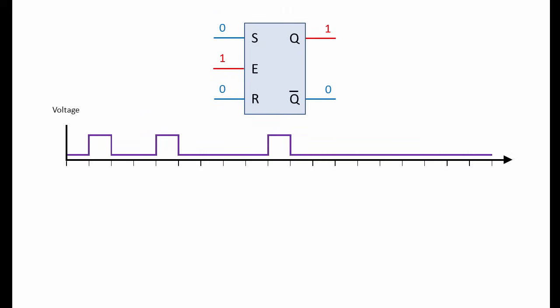We can illustrate what's going on at any one of the inputs, or the output, on a chart showing changes in voltage against time. At any given moment the voltage will be either low, zero volts to all intents and purposes, and representing the binary value zero,